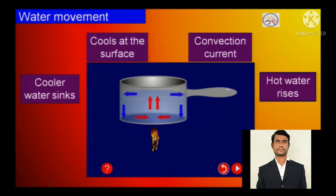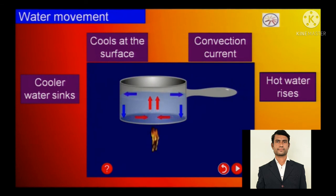In nature we cannot maintain a vacuum, and we have atmospheric pressure unlike other planets. So the cold fluid will actually come down to fill the space created by the updraft of the hot liquid. This is the convection current shown in this video.